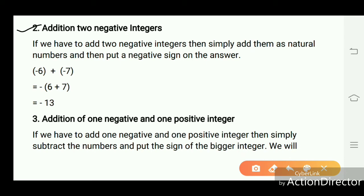Second case: addition of two negative integers. Here we take two negative numbers and add them. If we have to add two negative integers, simply add them as natural numbers and then put a negative sign on the answer. For example, minus six plus minus seven: we take the negative sign in common, add six plus seven to get thirteen, and place a negative sign before it, giving minus thirteen.